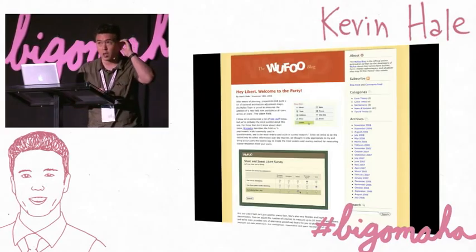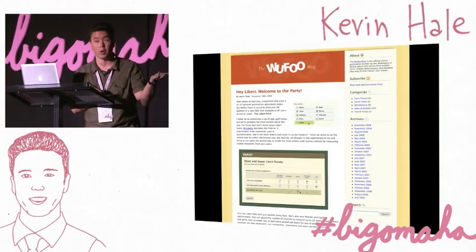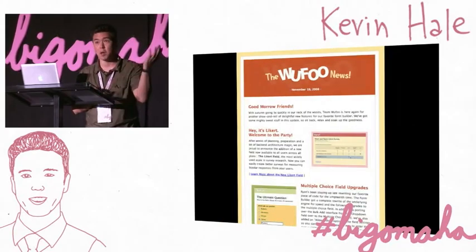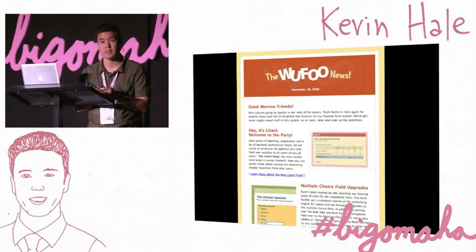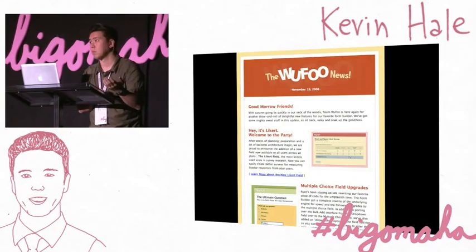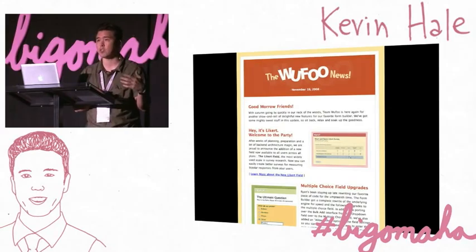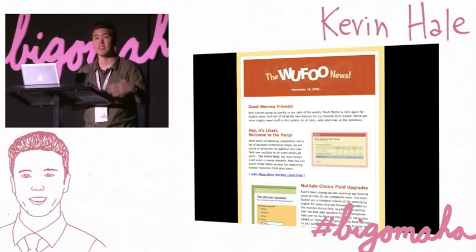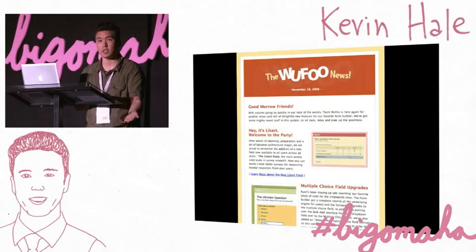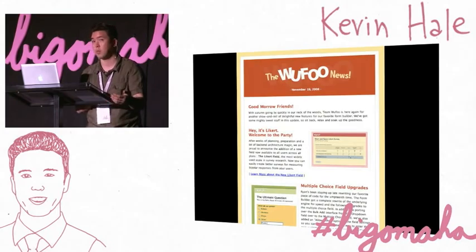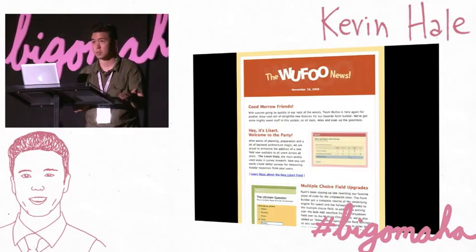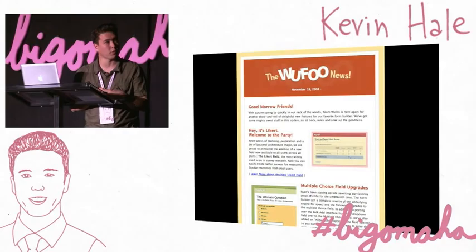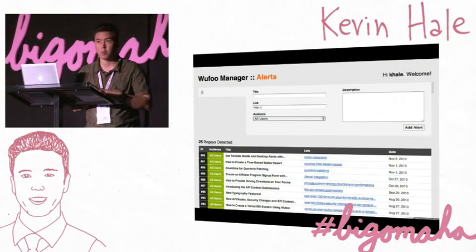We noticed a problem: not everyone was subscribed to the emails, our open rates weren't great, people weren't subscribed to the blog, not everyone followed our social media. We had all these users who didn't realize how much effort we were putting into their relationship. That's discouraging to employees because the usage rate of new features stays low. To combat this, we came up with something called the Wufoo Manager Alert System. Every time we build a new feature, we timestamp it and write a description. Every time a user logs in, we check the last time they logged in and show them any features built since their last login.